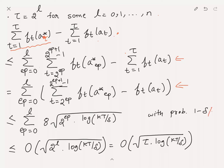From the regret guarantee for each epoch, with probability at least 1 - delta/T, each epoch's regret is at most 8 * sqrt(2^ep * log(kT/delta)). Summing from ep = 0 to l gives a geometric series, which sums to order sqrt(2^l * log(kT/delta)). Since 2^l = tau exactly, this is order sqrt(tau * log(kT/delta)), completing the proof for the case when tau is a power of 2.